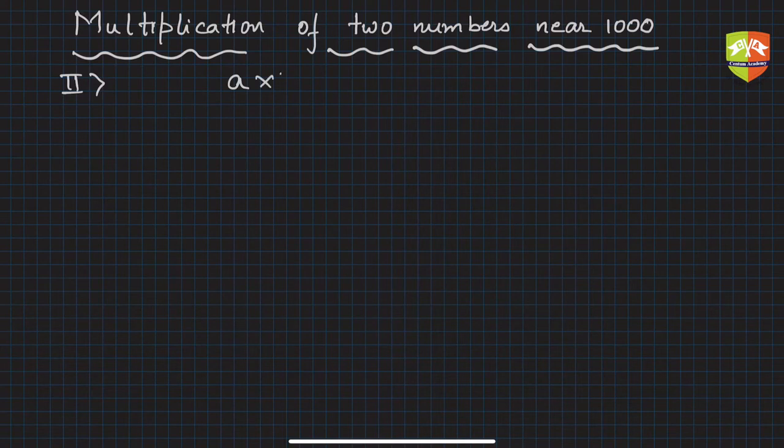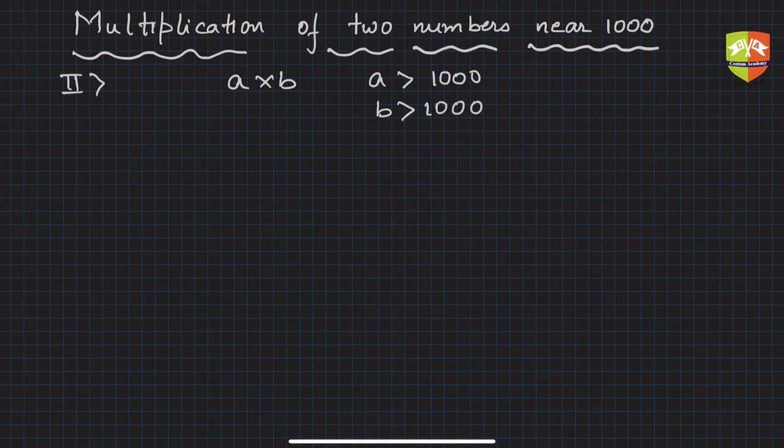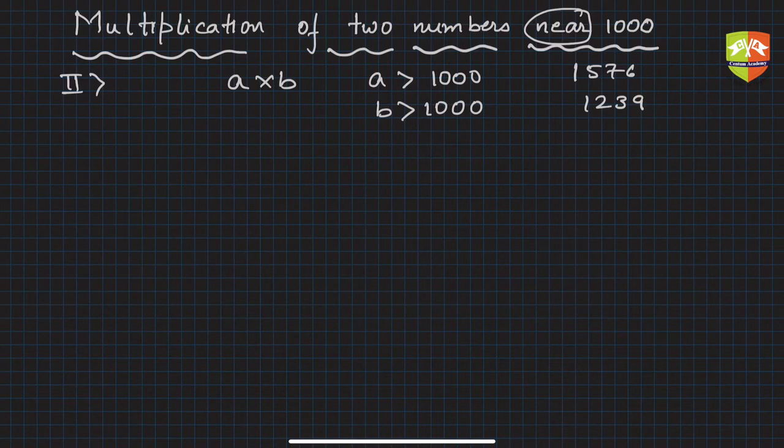So a times b we are performing, where a is greater than thousand and b is greater than thousand. When I say greater than thousand, I'm not talking about numbers like 1576 or 1239. They have to be near thousand, close to thousand. We will be restricting it to, let's say, thousand to 1020, maximum like this.